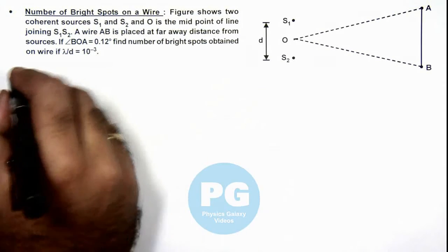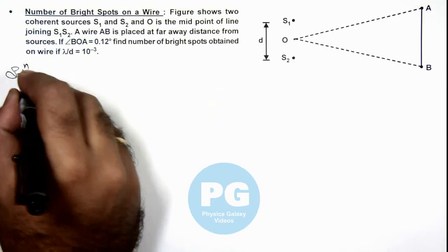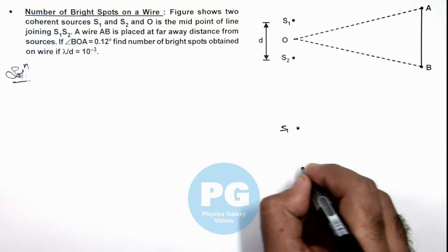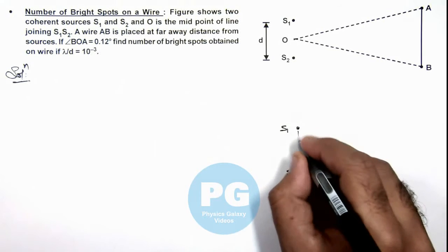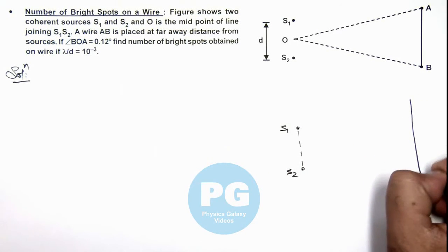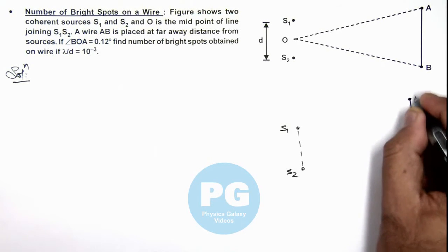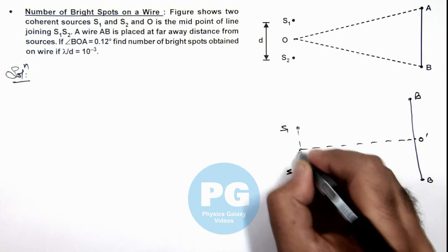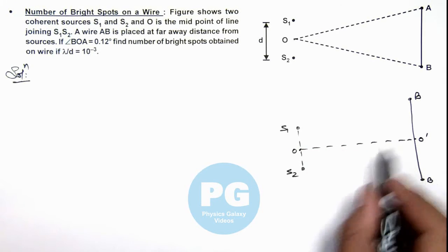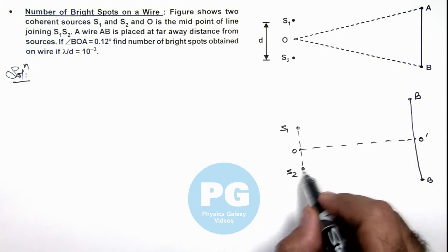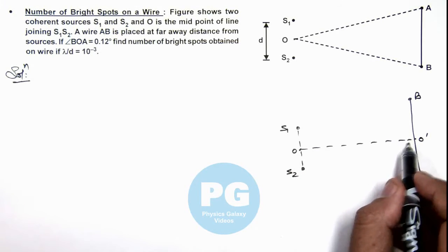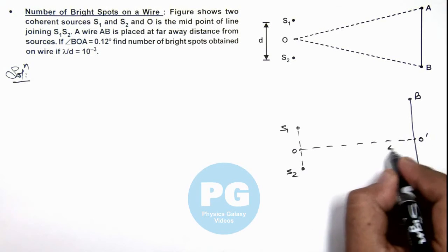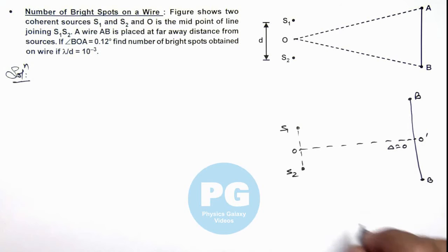So here we can analyze the situation in respect of interference of light from the sources S₁ and S₂. And here if this is the wire AB, and we consider a center point O' which is there on the wire, so O' is a point where we can say the path difference of the light beams from two sources S₁ and S₂ will be zero. So there will be a bright spot obtained at the center of this wire AB.